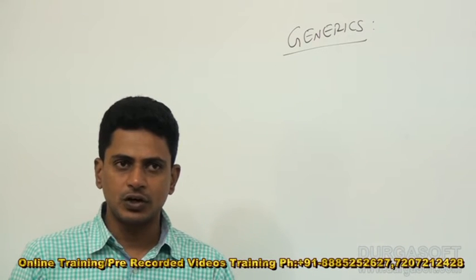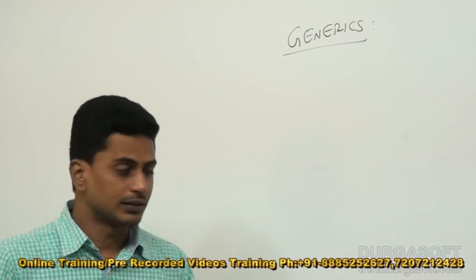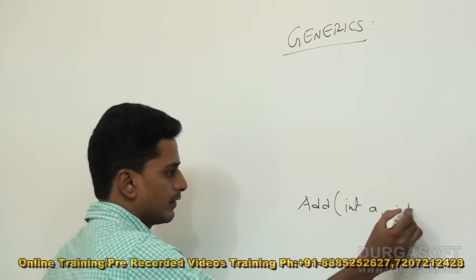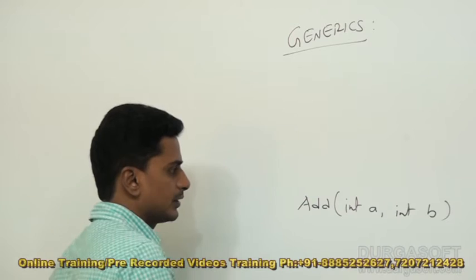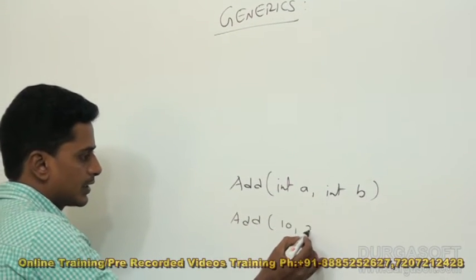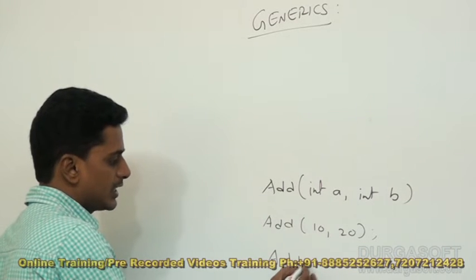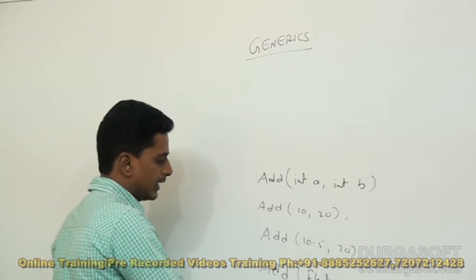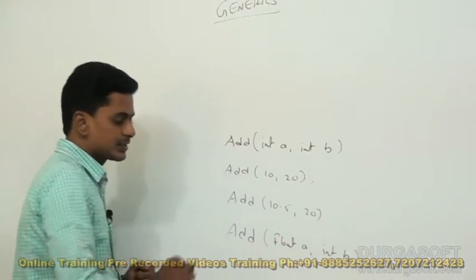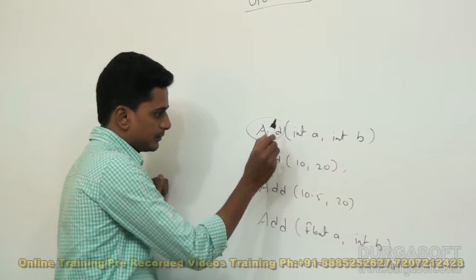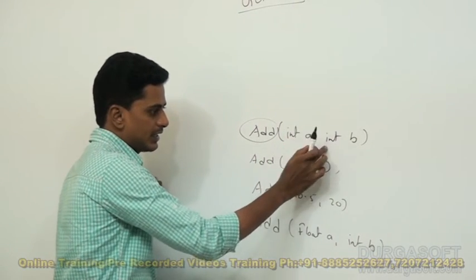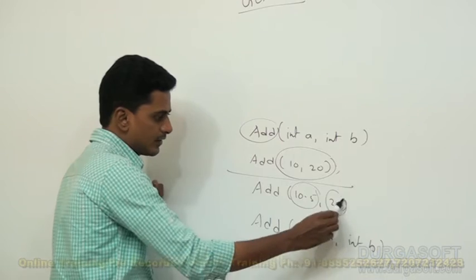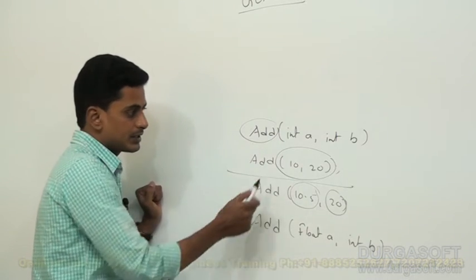When data types of arguments are changed, a function can be overloaded. For example, consider a function having two parameters — int a and int b. To call this function, we pass values like 10 and 20. But if we pass 10.5 and 20, then we need to overload the function with float a and int b, because the original function only accepts two integers.